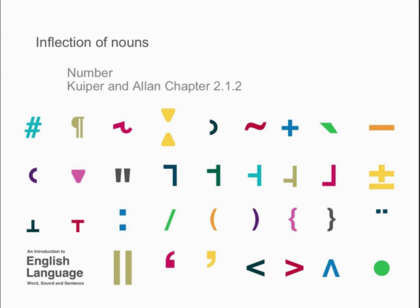We now turn to a number of parts of speech, the major categories that were mentioned in the previous talk, and we're going to look at them one by one. The first one we're going to look at is the category of noun. If you learnt about nouns when you were at primary school, you would have learnt that nouns are naming words. Well, that's true in a way, but it's not altogether helpful in deciding whether something is a noun or not. Look at the word 'breathe' — it's certainly the name of a particular activity, but it's not a noun. The noun is 'breath', and 'breathe' is a verb.